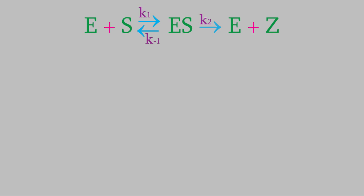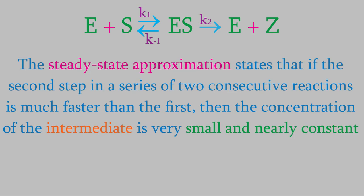We talked about the steady-state approximation back in video 4. If you've forgotten about it, you might want to refresh your memory before we move on. Anyway, the steady-state approximation says that, for a series of two consecutive reactions, if the second one is much faster than the first, then the concentration of the intermediate is nearly constant. That means that the rate with respect to the intermediate is nearly zero, because the concentration of ES isn't changing.